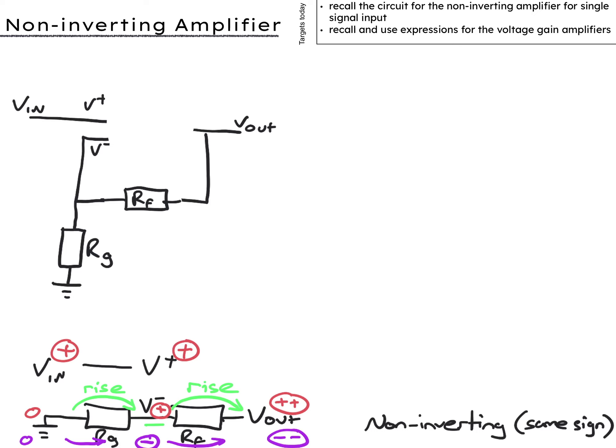All right you should have paused this isn't enough time. Anyway the current in Rg must equal the current in Rf and V_in equals V_plus equals V_minus so V_in minus zero over Rg equals V_out minus V_in over Rf.